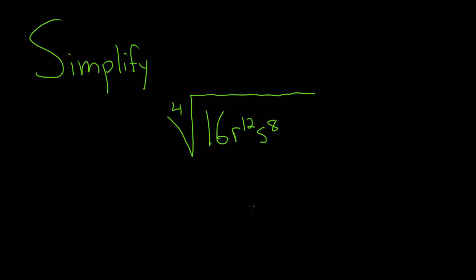In this problem we're going to simplify this expression. We're trying to take the fourth root of this whole thing. The trick is to write everything to the fourth power — each piece to the fourth power. The reason is, assuming everything is positive, which it is in this case, if you have the fourth root of x to the fourth, you get x. So the fourth root will get rid of the four. If we write everything to the fourth power, we can get rid of all the radicals.